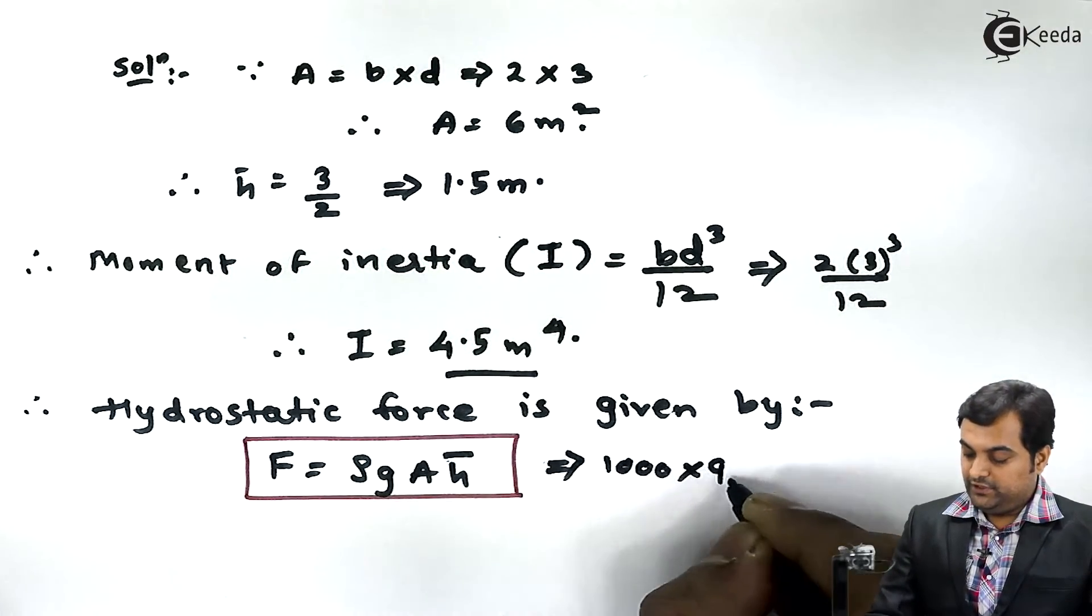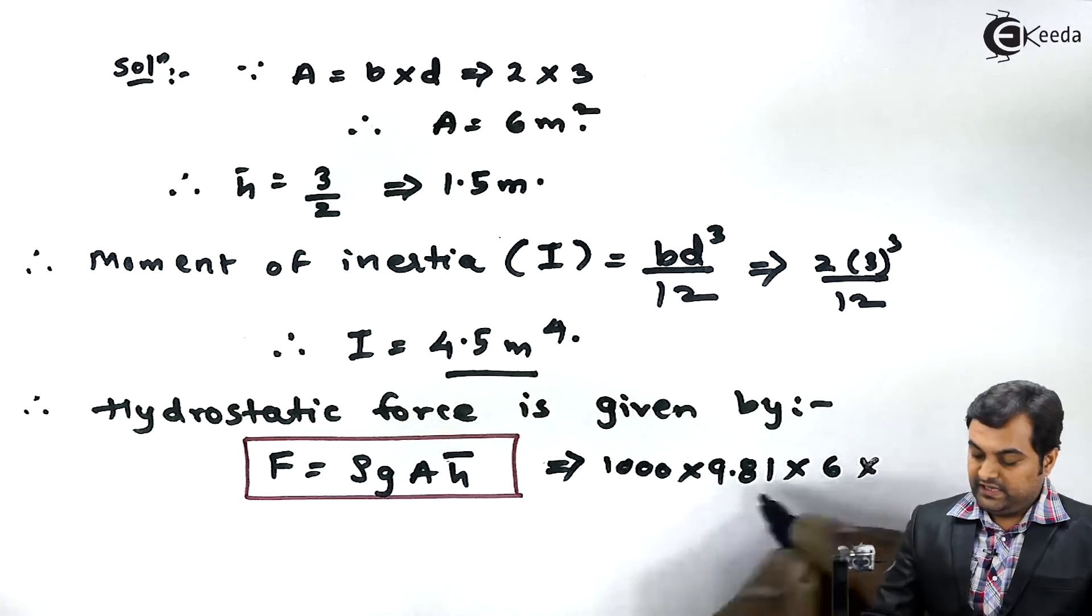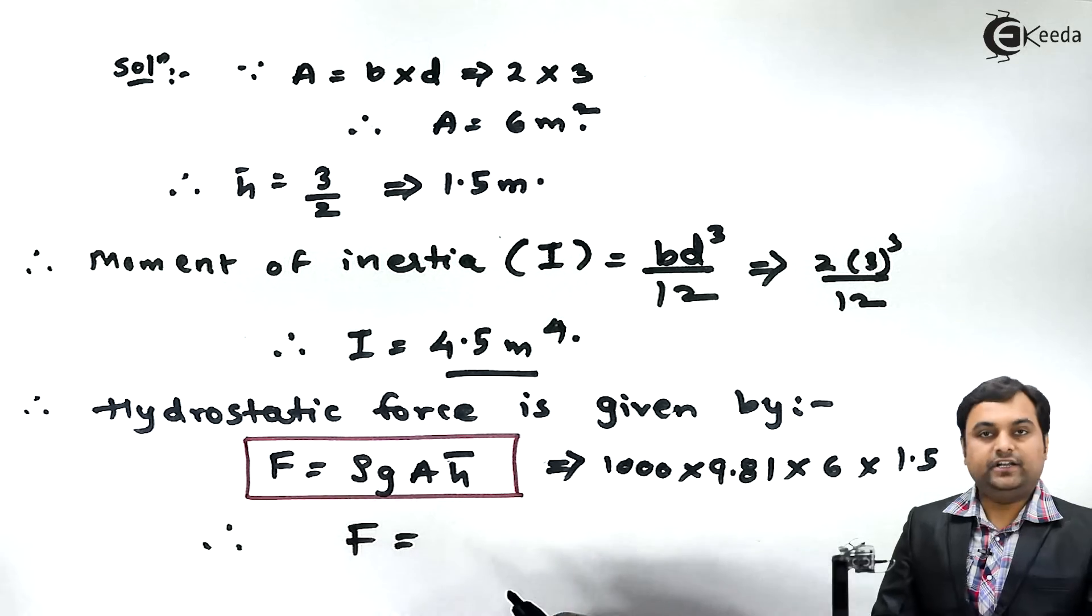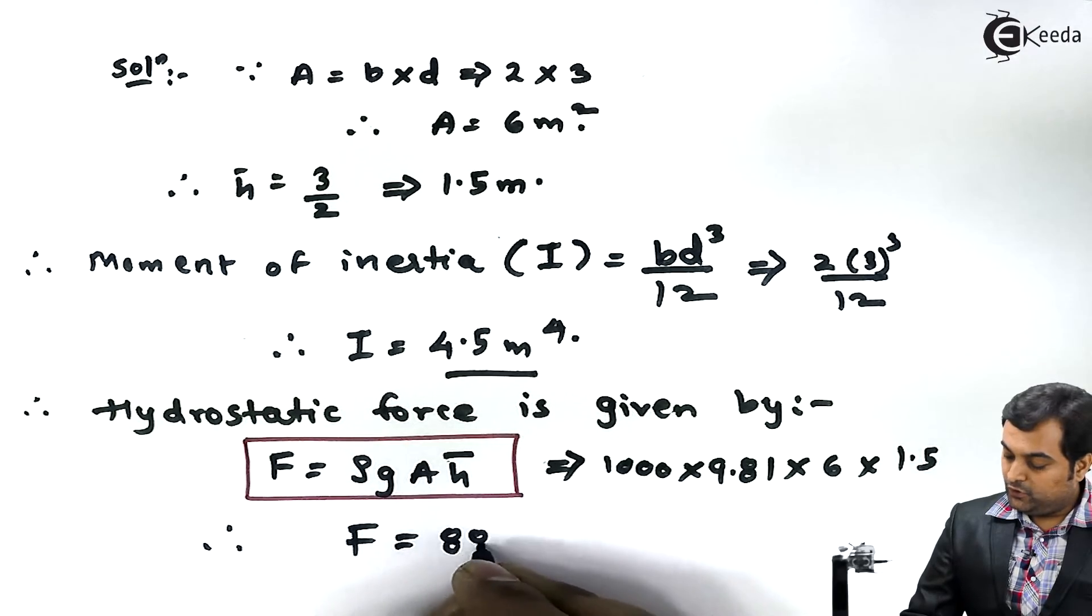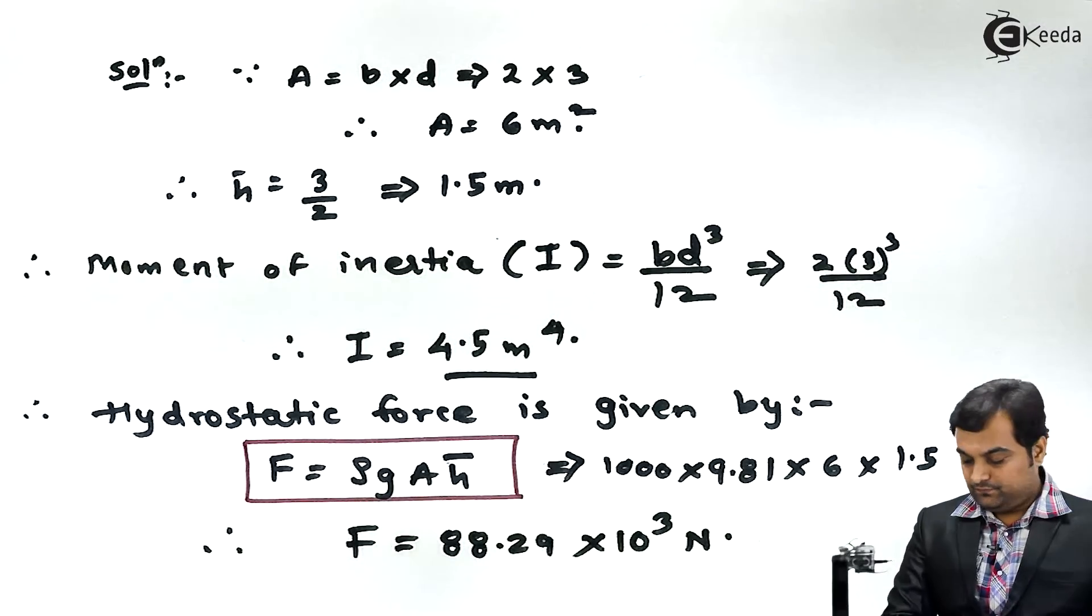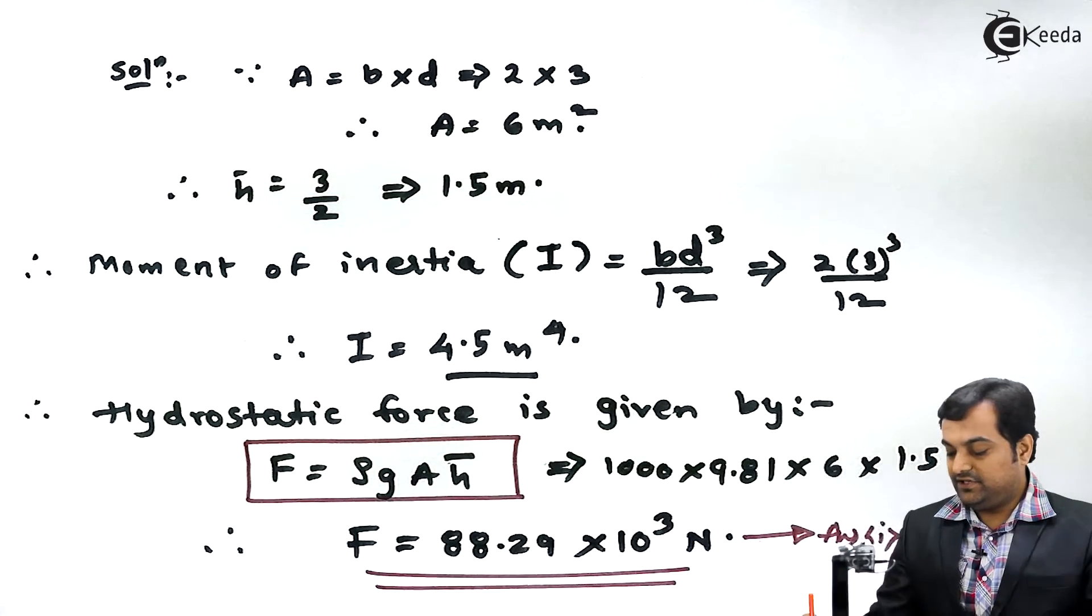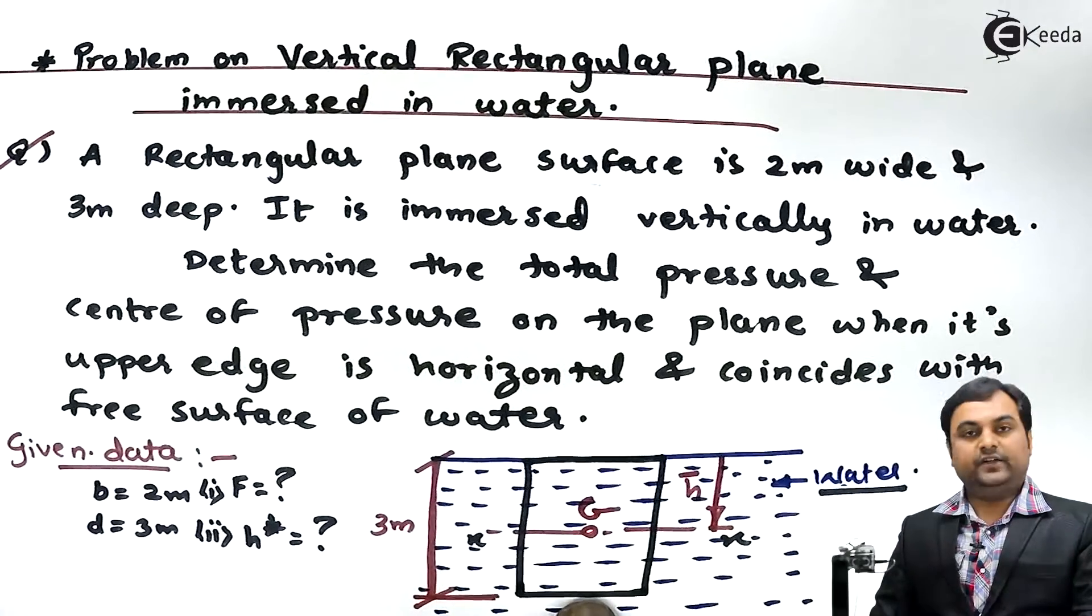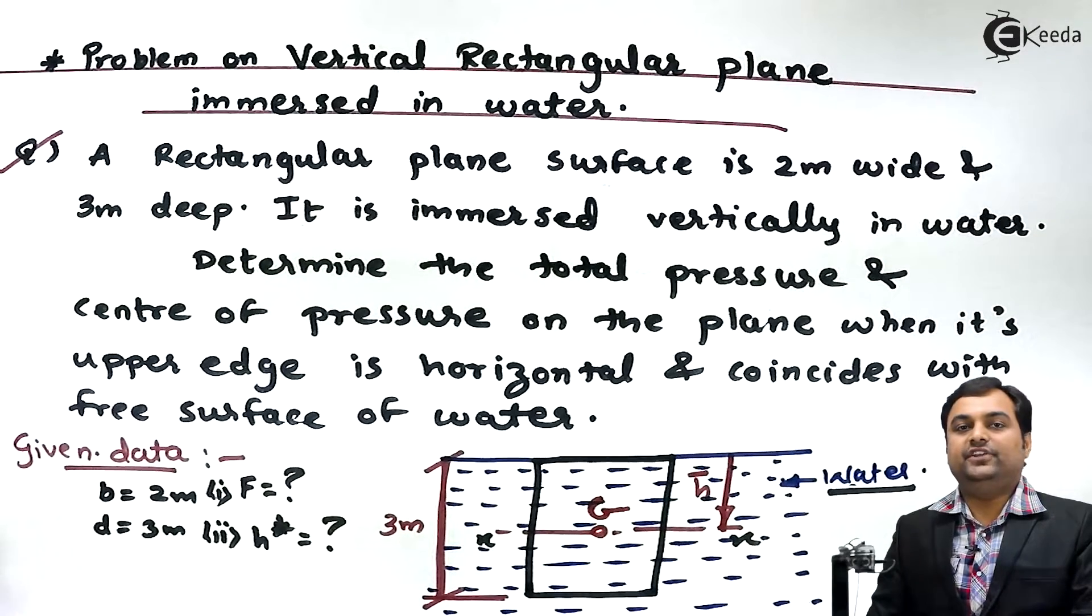g is 9.81, capital A is 6 (the area), H bar is 1.5. So from this if I calculate the hydrostatic force, answer comes out to be 88.29 × 10³ Newton. This is my answer which I can say is answer number one. Now this much is the force which is acting on this rectangular plate. I want to find out where this force would be acting. For that we need center of pressure.